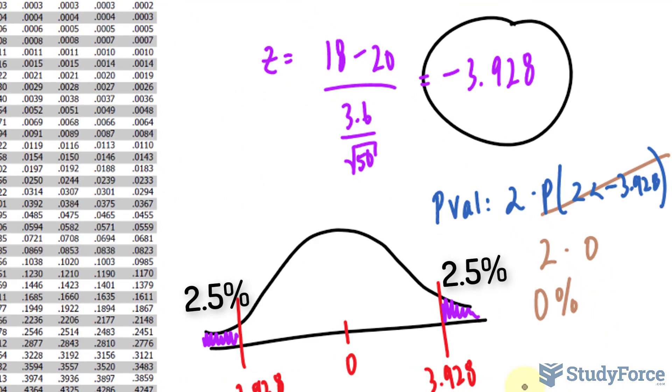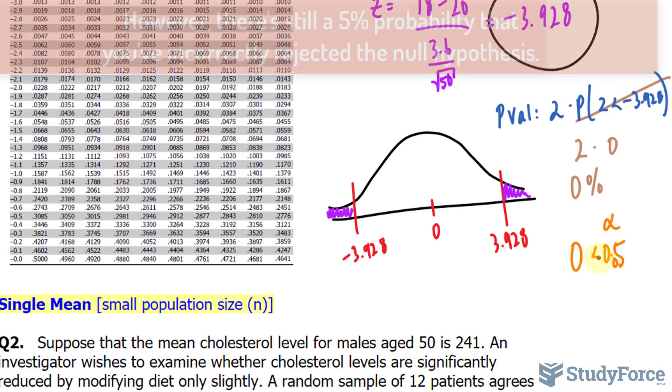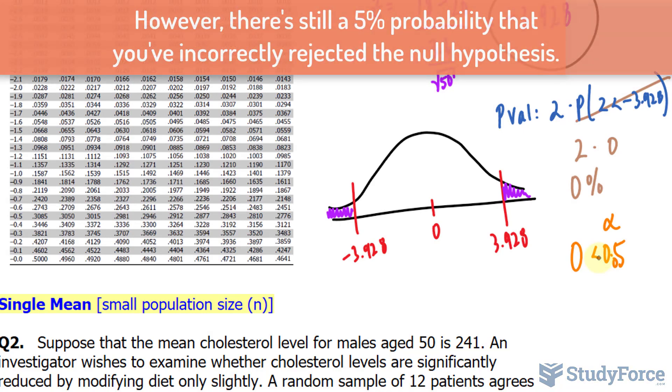Hence, it lies inside the rejection region. We conclude by writing 0 is less than 0.05, the value we chose for α, therefore we will reject the null hypothesis. There is sufficient evidence at 0.05 significance level to conclude a significant difference of the means between 18 and 20.